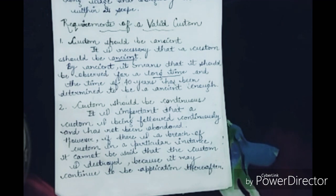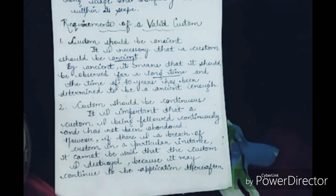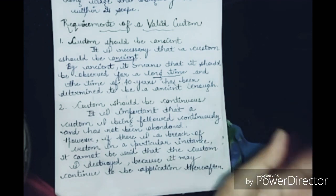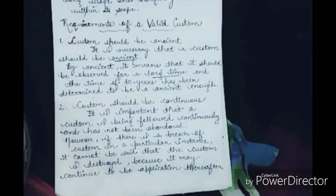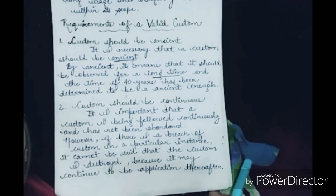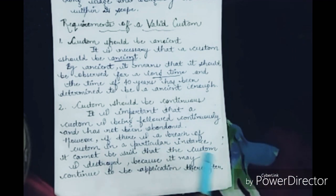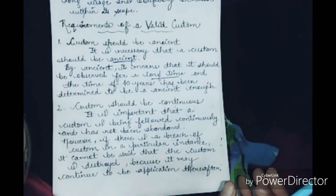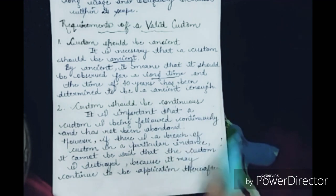The second requirement is that the custom should be continuous — it must be followed continuously and not abandoned. However, if there is a breach of a custom in a particular instance, it cannot be said that the custom is destroyed, because it may continue to be applicable thereafter. A custom that is breached at a particular point in time is only stopped temporarily and can be brought back into continuation.